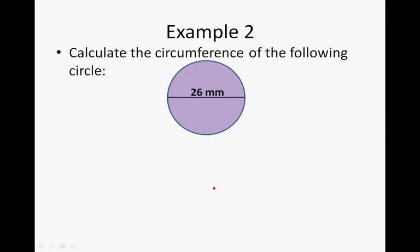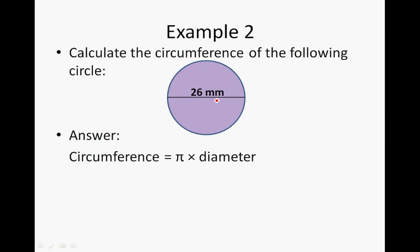Calculate the circumference of the following circle. A circle with a diameter of 26 millimeters. So it's Pi times diameter. So 3.142 times 26. That is 81.692 millimeters. And that is rounded to 81.69 millimeters.